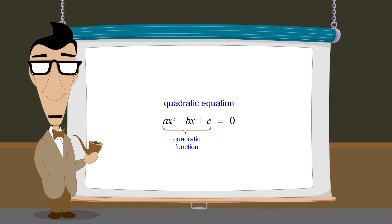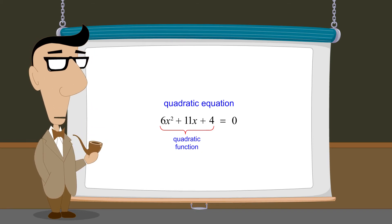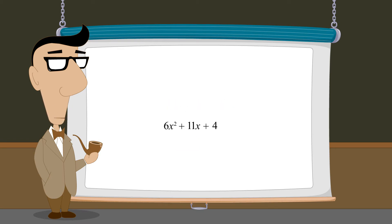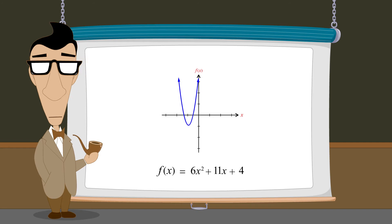For instance, the equation 6x-squared plus 11x plus 4 equals zero states that the quadratic function 6x-squared plus 11x plus 4 must have a value of zero. So to solve this equation, we must find the x-values where the function's value is zero.